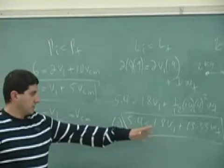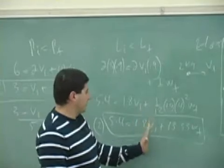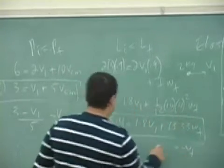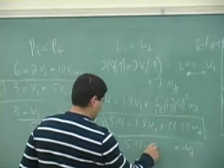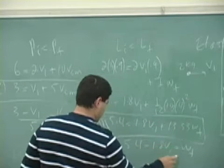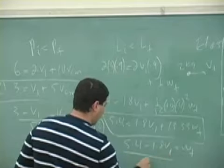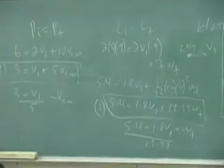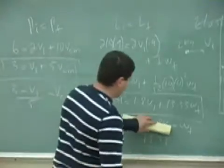And then over here, v1 is the one that they both share, so solve for omega final, say 5.4 minus 1.8 v1 over 13.33.